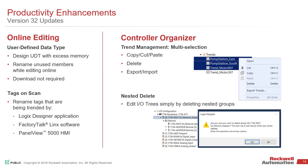Another nice one is the nested delete. If you've ever taken a pre-created program from a different project and wanted to bring it in but had a rack of I/O or a whole tree of Ethernet modules and drives in the I/O tree configuration, you previously had to go through and delete each child item — each Ethernet module out on the network — separately before you could delete the top parent module. Now you can simply delete the parent module and everything configured underneath it gets wiped out too, making it easier to delete a whole tree of Ethernet-based I/O or drives.